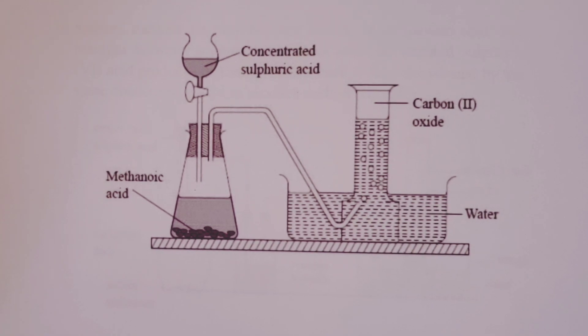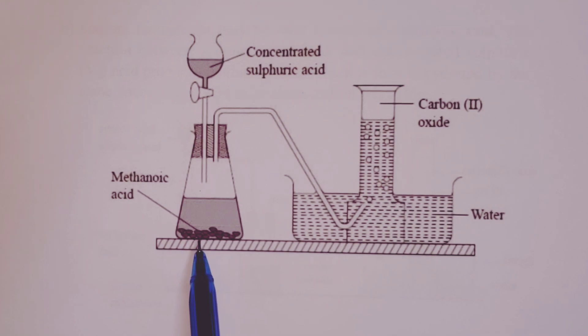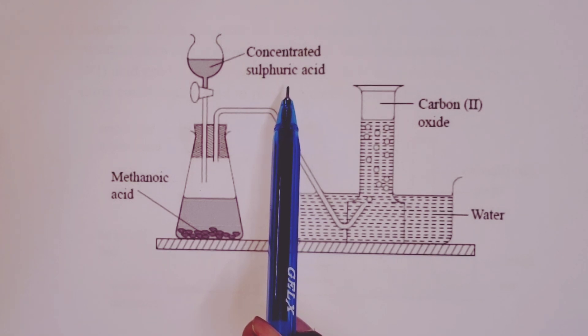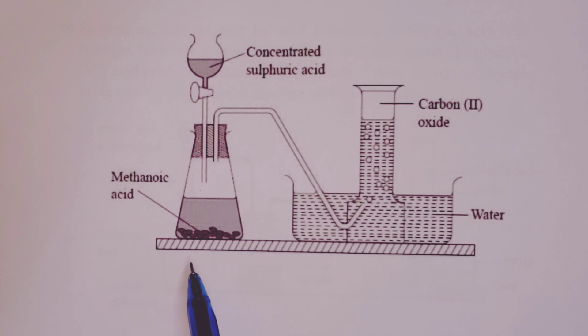So here we are. We shall have our methanoic acid in a conical flask into which we shall introduce our concentrated sulfuric (VI) acid. This dehydrates the methanoic acid to produce carbon (II) oxide which shall then be collected over water. The equation for the reaction is as follows: HCOOH is our methanoic acid. We are using concentrated sulfuric (VI) acid to remove the elements of water in a process that we have just called dehydration. So you shall produce your carbon (II) oxide gas and water will be lost. So this setup gives a wet sample of carbon (II) oxide.